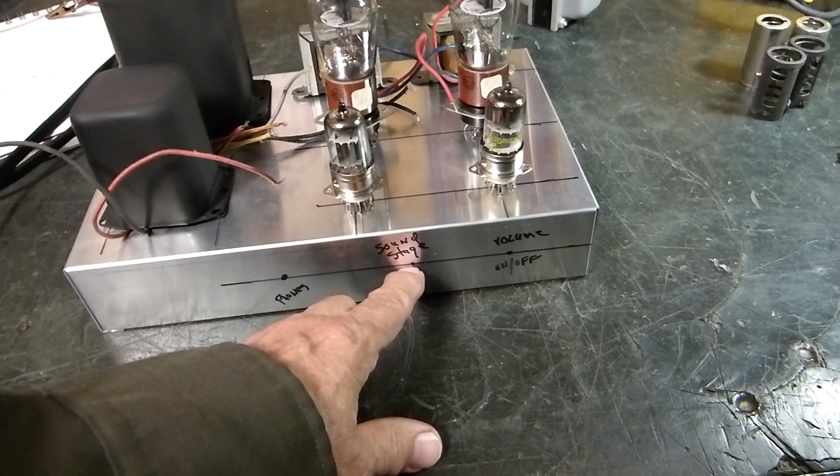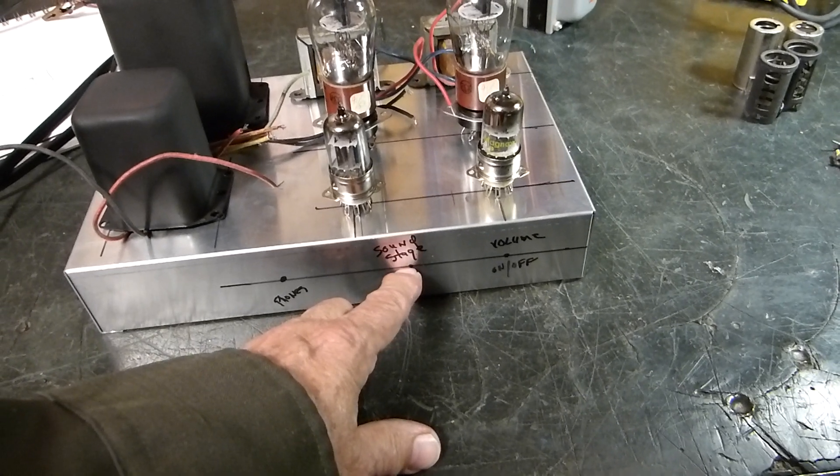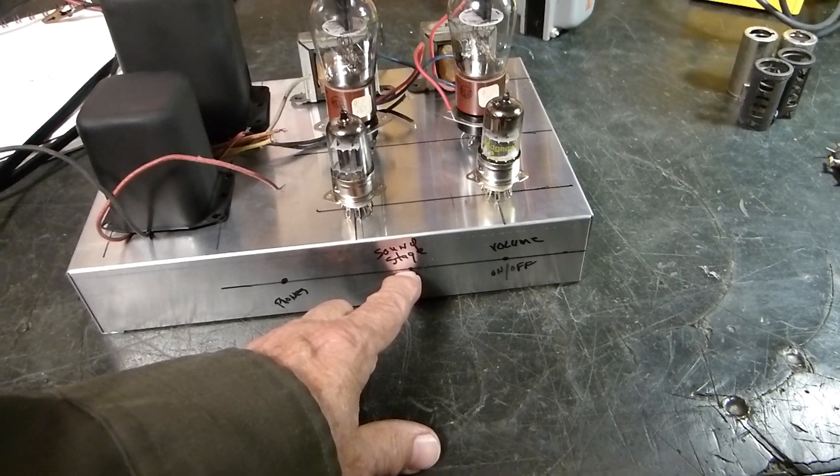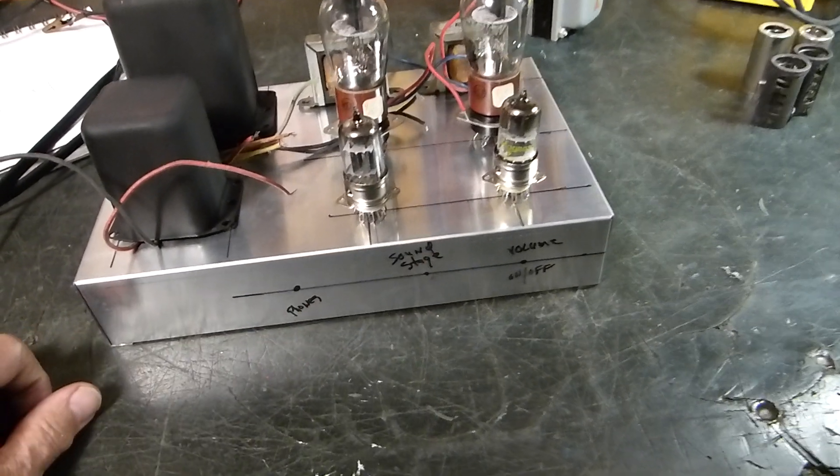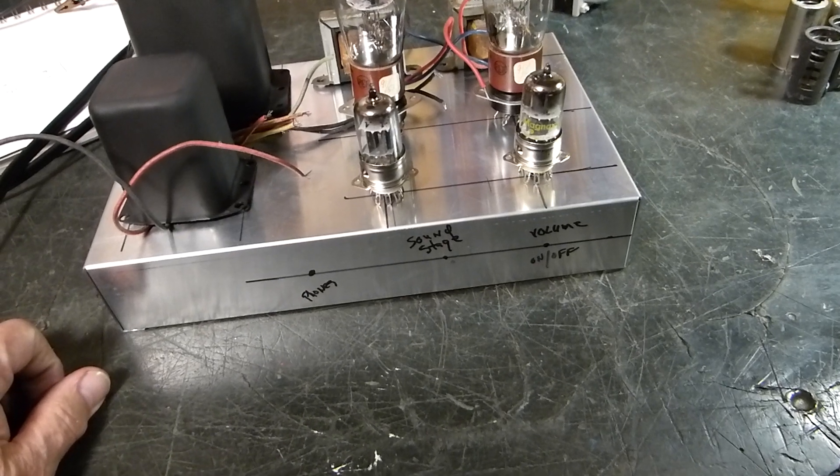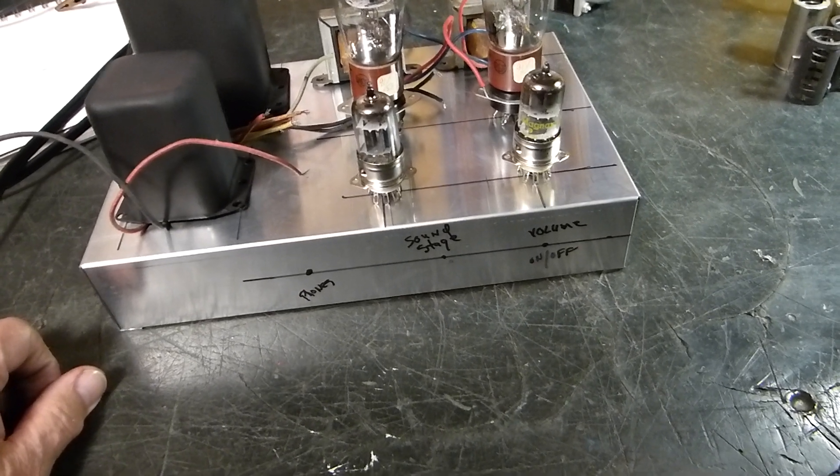Now this one right here that I call soundstage, I took that from a Fender amplifier years ago. What they do there, what I call a soundstage, is that's the variable feedback loop.